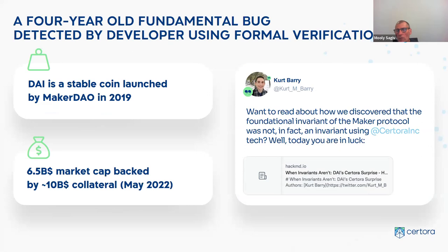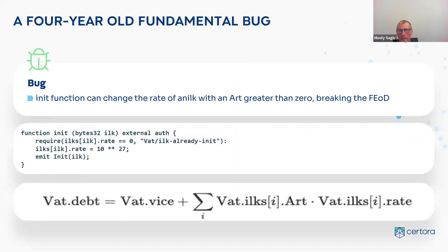Here's a more interesting example found by our customer MakerDAO — one of the top players in this space. They wrote their own invariant on DAI, the stablecoin they implement, stating that it behaves as a stablecoin. They actually thought they had proven the invariant, but the tool found a fault: a four-year-old bug in the code. There is a degenerate case in the init function where this invariant — basically that the sum is equal to the sum you hold — can be violated. The tool found exactly one behavior that allows you to violate it.